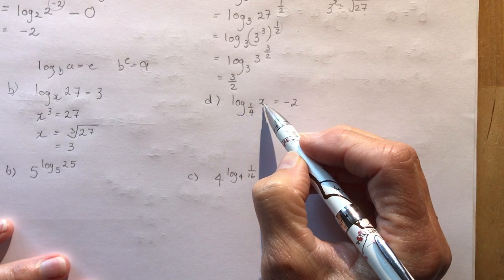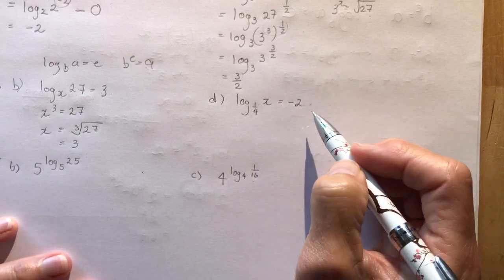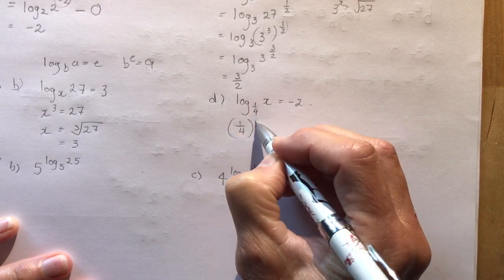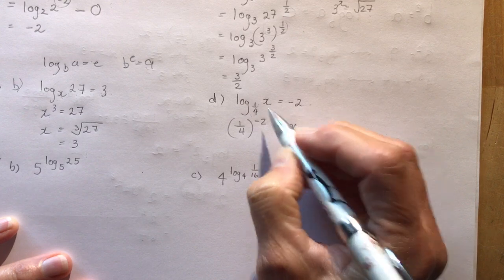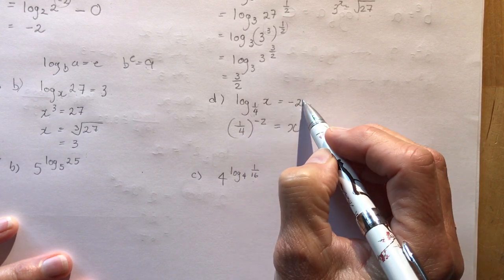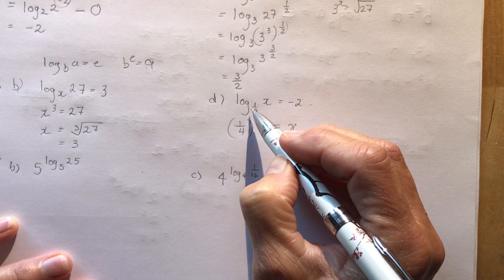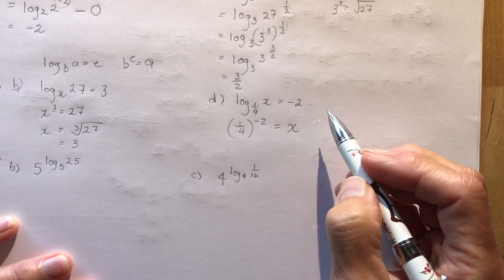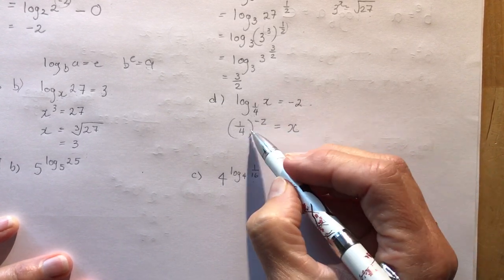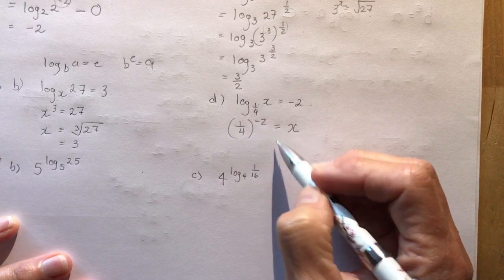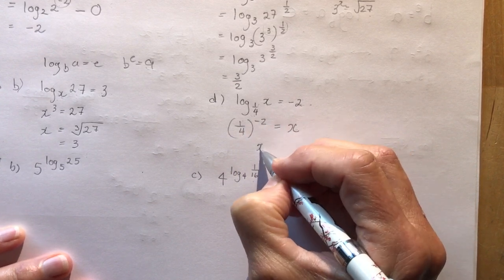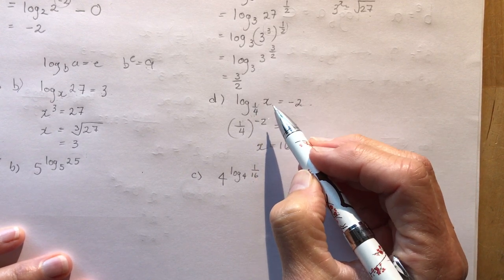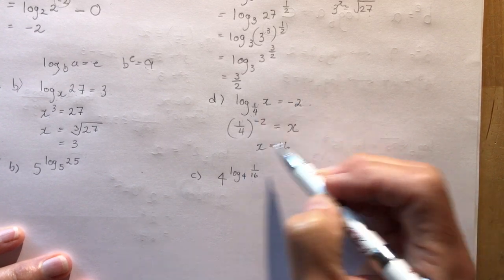Log base 1/4 of x equals negative 2. Using 'be a log bay': base is 1/4, exponent is negative 2, so (1/4) to the negative 2 equals x. A negative exponent means you flip and square: (1/4) to the negative 2 is 4 squared, which is 16. So x equals 16.